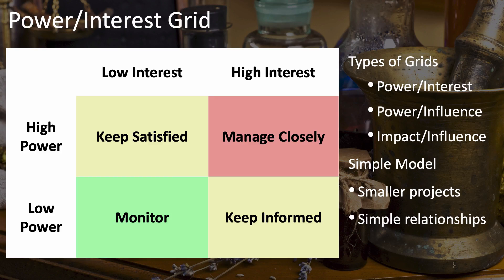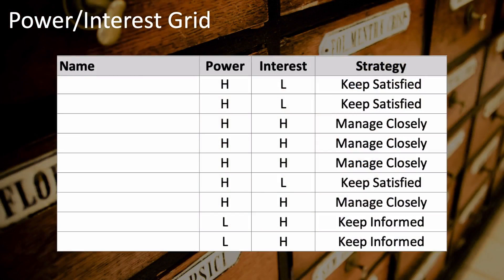These types of grids are simple two-dimensional models — useful for smaller projects or projects with relatively simple relationships. You can use power and interest, power and influence, impact and influence, or any combination. I tend to use a spreadsheet where I record power and interest for each stakeholder, then use a simple formula to determine the management strategy based on those values, with conditional formatting for color coding — for example, highlighting 'Manage Closely' in red. You can use whatever works for you, but I find this approach useful.